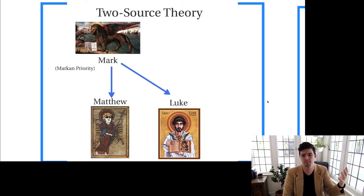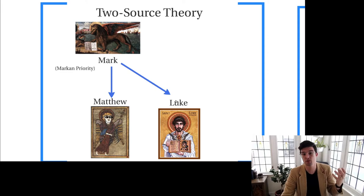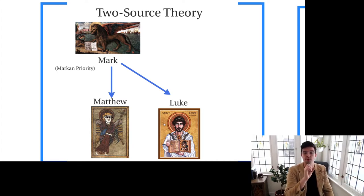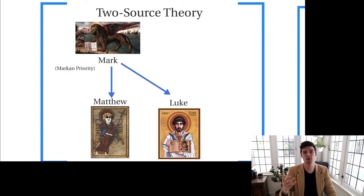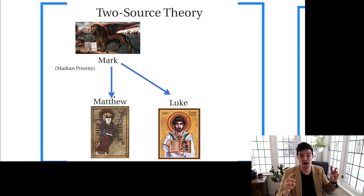The two-source theory starts with Marcan Priority and says that Matthew and Luke both use Mark independently of one another. These lines represent Marcan material being reproduced, reused, and edited in both Matthew and Luke. This represents what we call the triple tradition from our last video — those places where Matthew, Mark, and Luke all share material. Triple tradition also includes anything shared between Mark and Matthew not in Luke, and anything shared between Mark and Luke not in Matthew. There aren't many of those, but they do occur and still count as triple tradition.